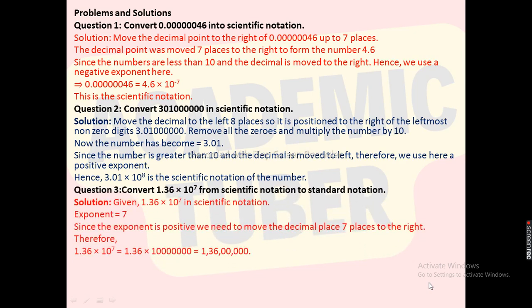Next question: Convert 1.36 × 10⁷ from scientific notation to standard notation. Given 1.36 × 10⁷ in scientific notation, the exponent is 7. Since the exponent is positive, we need to move the decimal place 7 places to the right. Therefore, 1.36 × 10⁷ = 1.36 × 10,000,000 = 13,600,000.